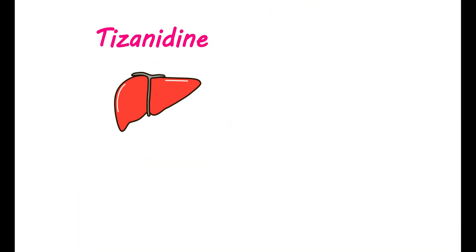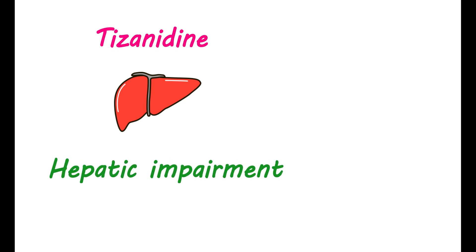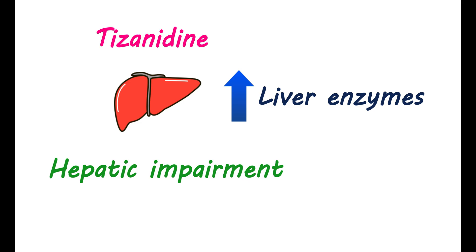On long-term use, Tizanidine can produce damage to your liver, which is more pronounced if you have pre-existing hepatic impairment. Before starting therapy, check the health status of your liver and establish a baseline of liver enzymes. When you are at a higher dose, liver enzymes should be assessed at least after one month of treatment to avoid any possible risk of hepatotoxicity.